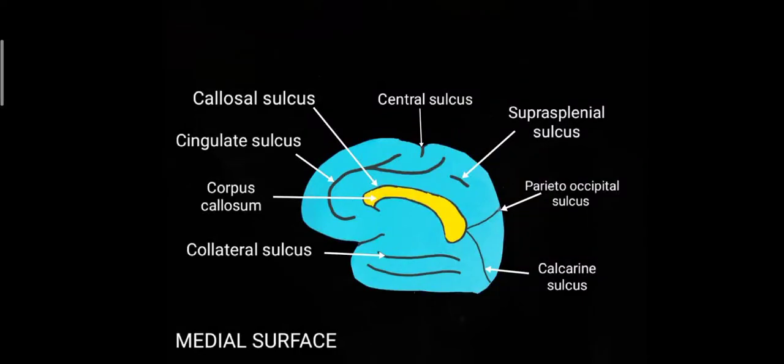Hi everyone, this is Dr. Manu Krishnanki and today we will be discussing the important sulci and gyri which are present on the medial surface and the inferior surface of the cerebrum. In the previous class we have seen the sulci and gyri of the superolateral surface, so today we will start with the medial surface.